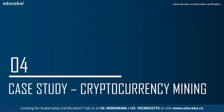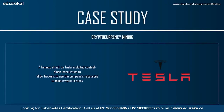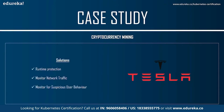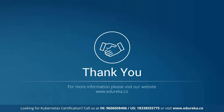Let's move ahead to the case study: cryptocurrency mining. A famous attack on Tesla exploited control plane insecurities to allow hackers to use the company's resources to mine cryptocurrency. Research shows other approaches that would-be miners are attempting. Ensuring that only trusted images can run in your cluster would prevent a bad actor from running an unexpected mining image. Runtime protection adds another layer of defense to ensure that even if an approved image has a vulnerability allowing code injection, that code cannot be executed. Monitoring for unusual activities such as unexpected CPU usage or unexpected resources being scaled out can help you detect when your resources are being used by an attacker. With this we come to the end of today's session on Kubernetes security practices.